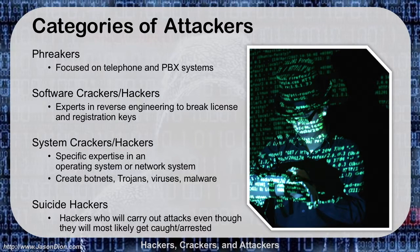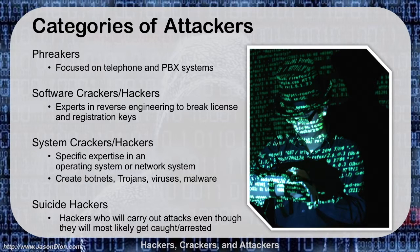Next we have software crackers and hackers — we touched on this earlier. If you want to break Microsoft's licensing and registration keys, that would be an expert in reverse engineering — that's your cracker. System hackers are the ones who go after operating systems or network systems. They're the ones who actually create malware, viruses, trojans, and botnets. These are pretty sophisticated guys who can reverse engineer code, look for weaknesses, find them, and exploit them. They're great to have on a security force if they're white hat — if not, it's a bad thing.